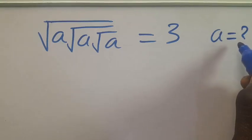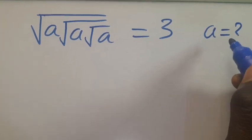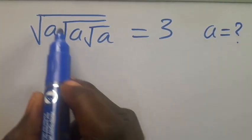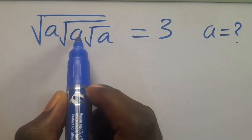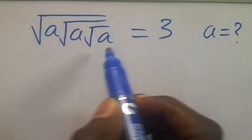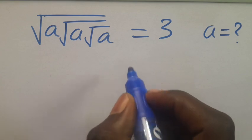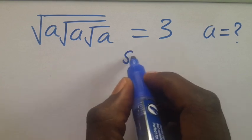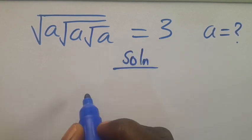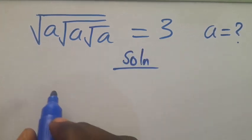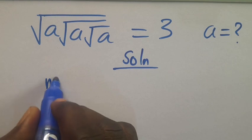What is the value of a, given that root of a multiplied by root of root of a multiplied by root of root of root of a equals 3? Let's have the solution and see Method 1.